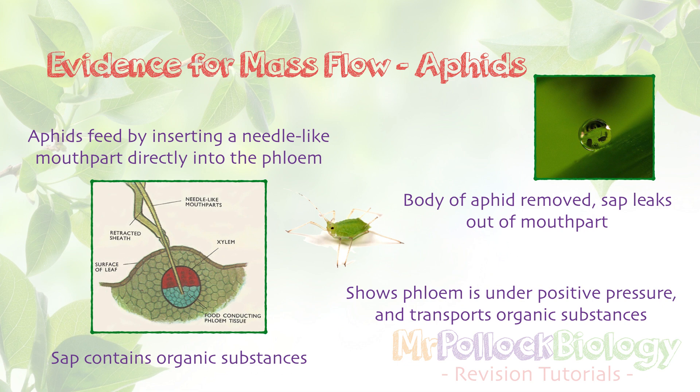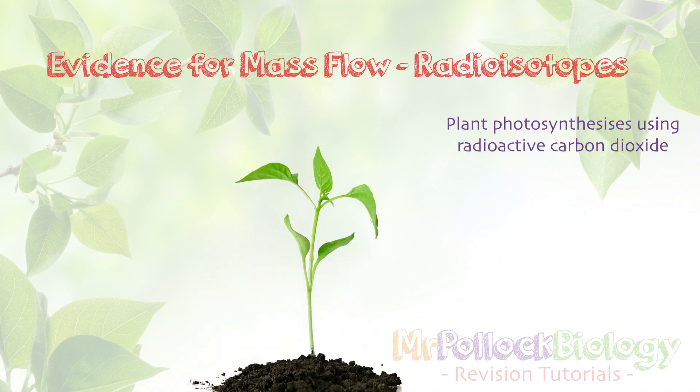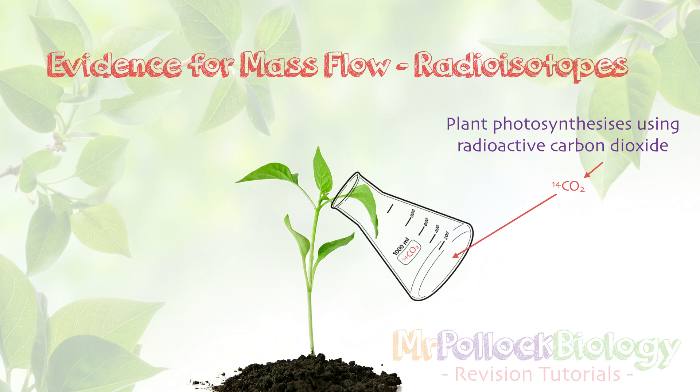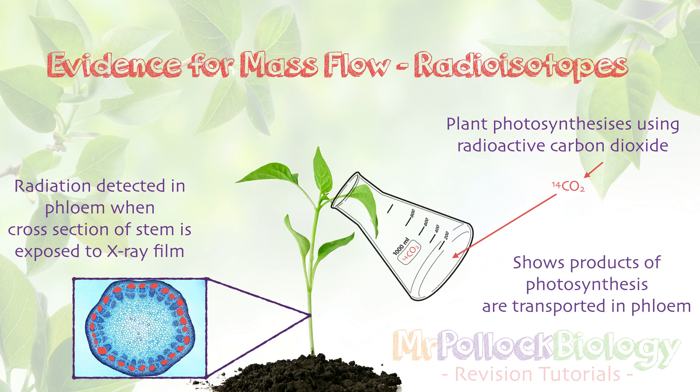The third and most elaborate experiment uses radioisotopes — specifically radioactive carbon in CO2. We take a plant and allow it to photosynthesize using radioactive CO2, with a bung in the conical flask to ensure only the radioactive CO2 is used. After some time, we take a cross-section of the stem and expose it to X-ray film. We see that the phloem shows radiation — we can detect the radioactive carbon-14 in the phloem — because that carbon-14 has been incorporated into the products of photosynthesis and is being transported through the phloem.